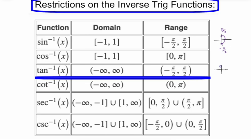Tangent has the same sort of relationship, with the only difference being open circles where the asymptotes would be. They go from negative π/2 to positive π/2. The other one that does that is cosecant.